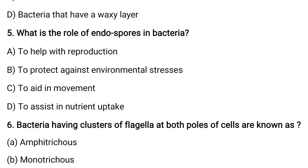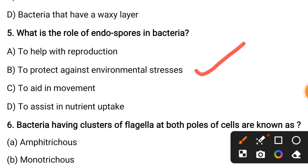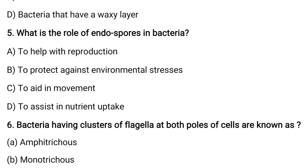What is the role of endospores in bacteria? Options are: to help with reproduction, to protect against environmental stresses, to aid in movement, or to assist in nutrient uptake. The correct answer is to protect against environmental stresses. Endospores are resistant spores produced especially by bacteria like Bacillus subtilis, allowing them to thrive in adverse conditions by producing these resistant structures.